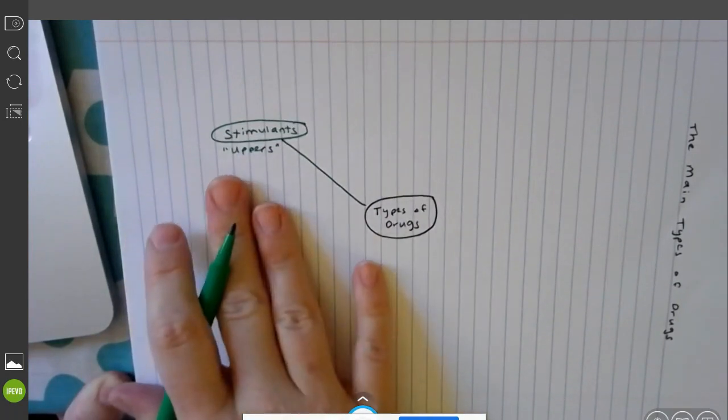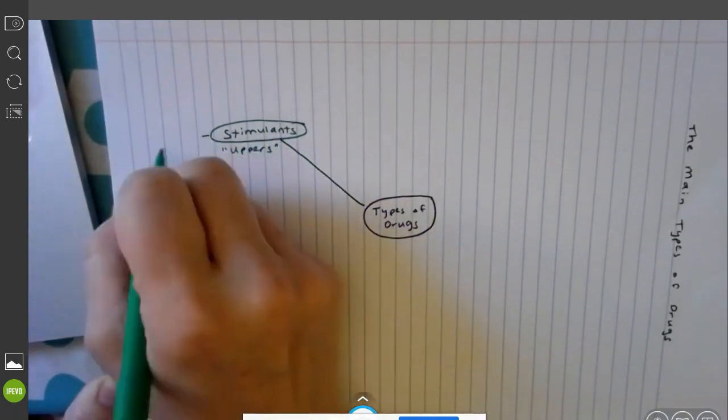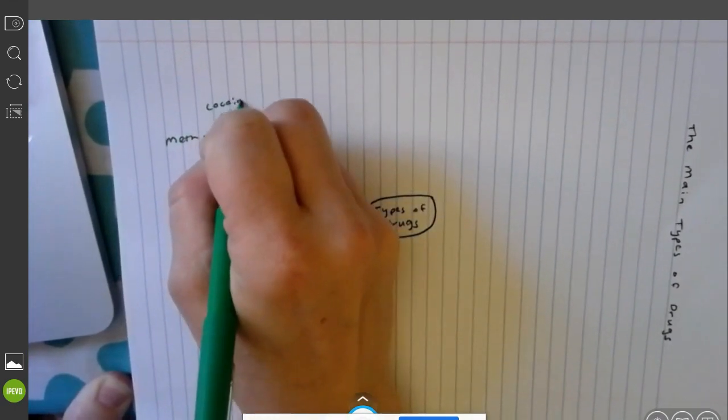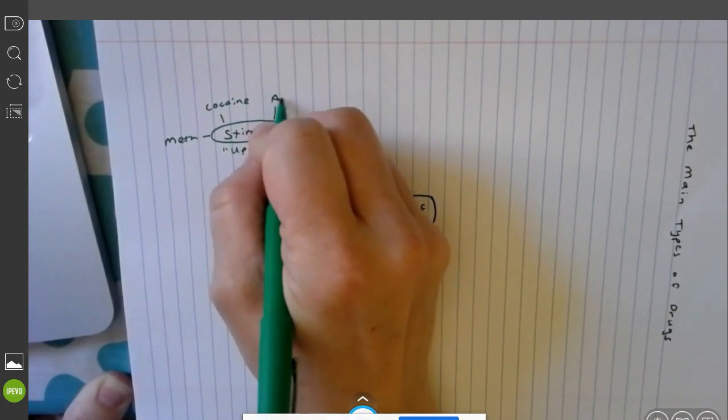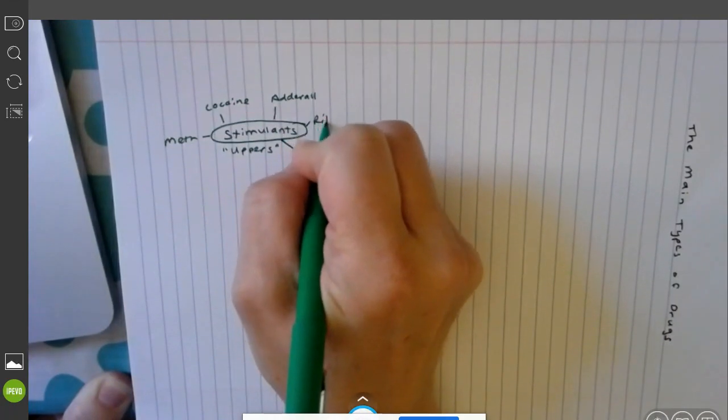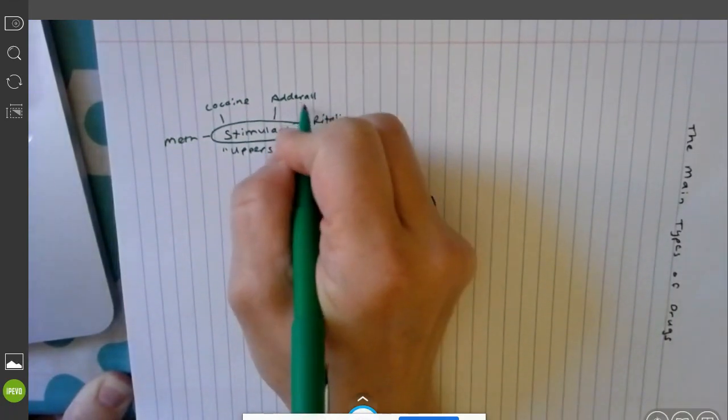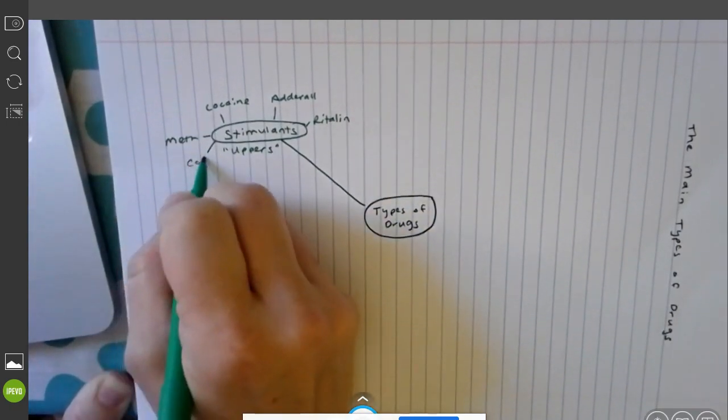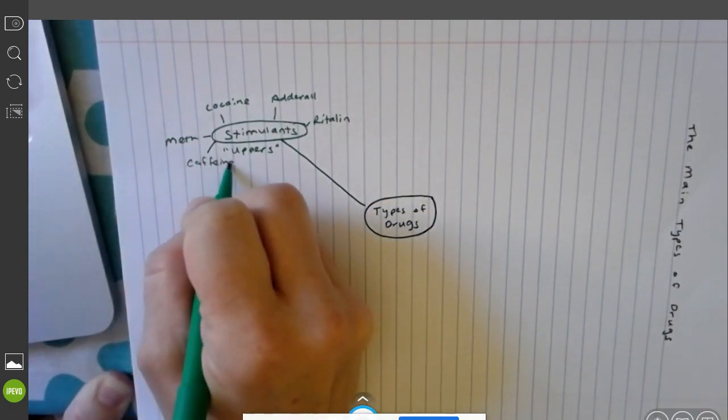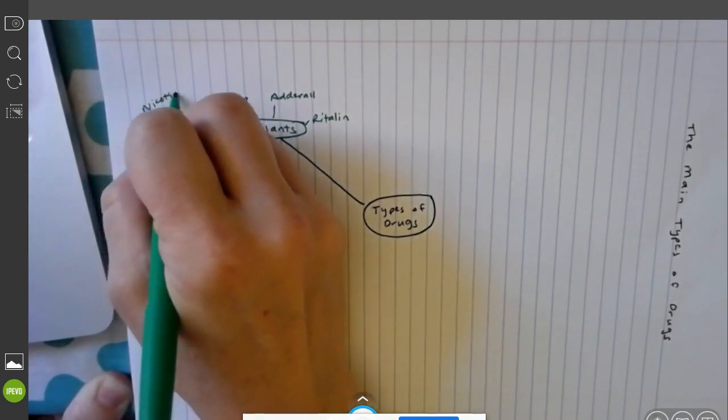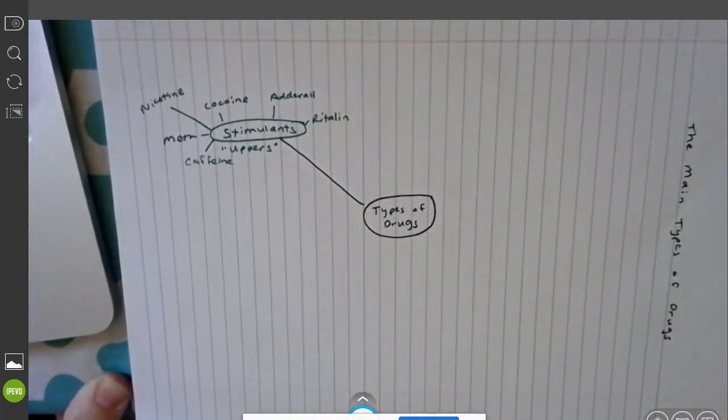They speed up everything in your body: your heart rate, your breathing rate, for some people their mood. Some examples of stimulants will be meth, cocaine, medical uses like Adderall and Ritalin, which are doctor prescribed for ADD but sometimes are abused. Then you have legal ones like caffeine and unfortunately nicotine.